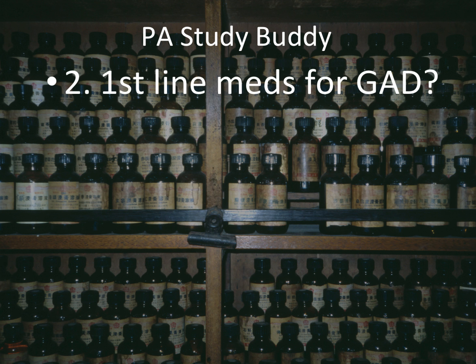Question number two: what is the first-line medication for generalized anxiety disorder? They'll tell you the patient has had symptoms for greater than six months pointing to GAD, and ask what's the best medication to prescribe. The answer is SSRI. Look at GAD just like a form of depression when it comes to treatment, because SSRI is the number one medication prescribed.